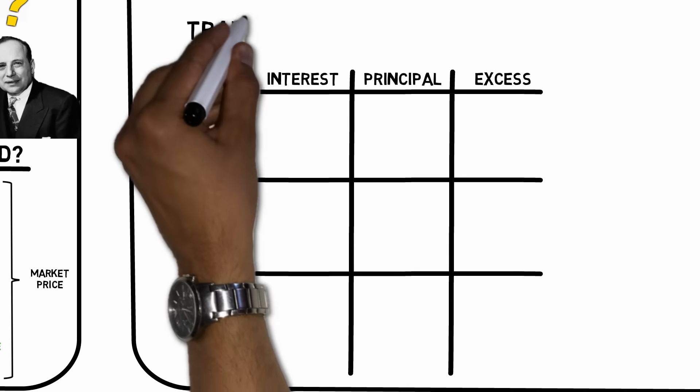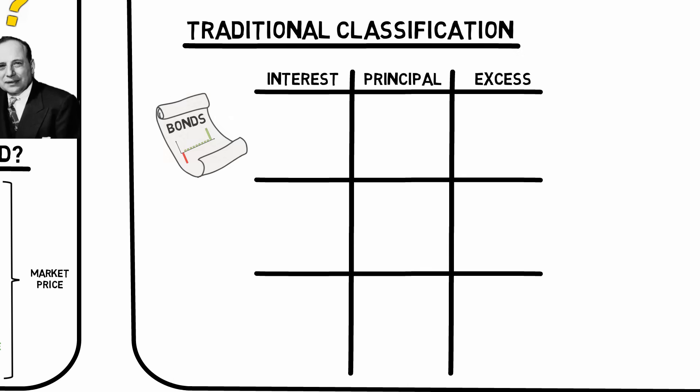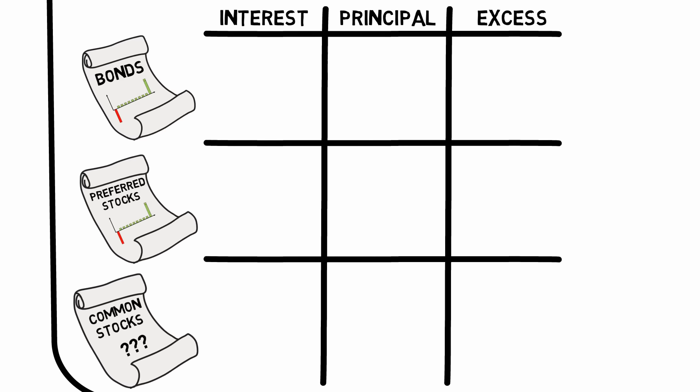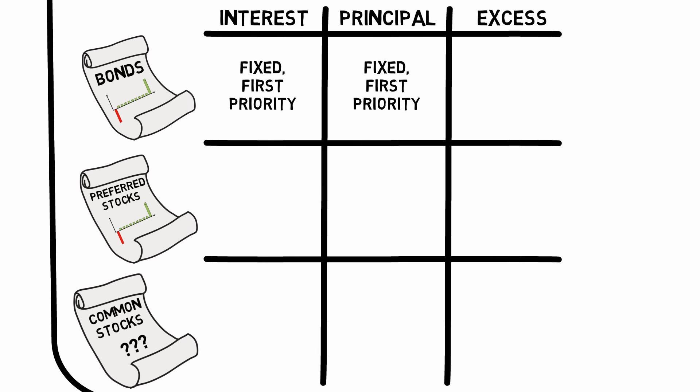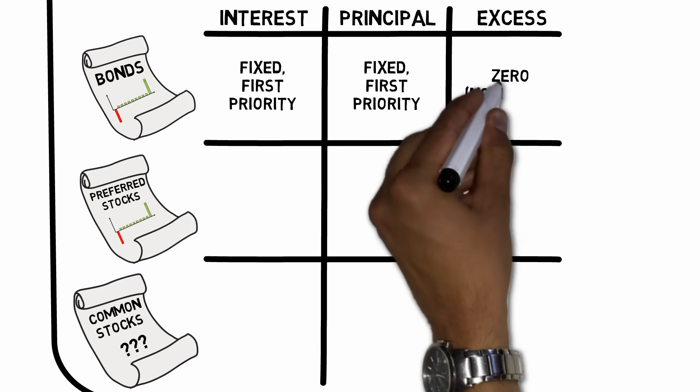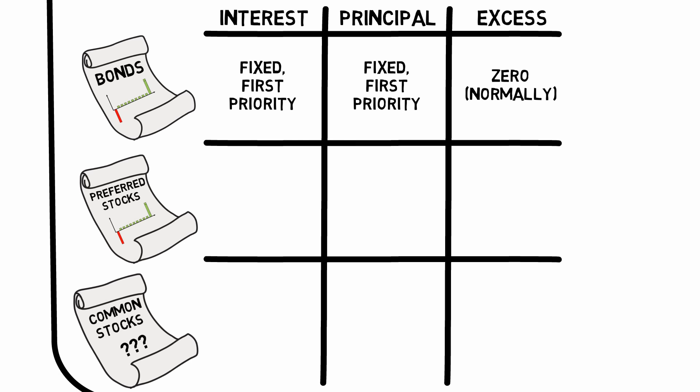The traditional classification is bonds, preferred stocks, and common stocks. Bonds have an unqualified right to fixed interest payments, an unqualified right to the repayment of the loan or principal amount, but no other participation rights in neither assets nor profits.